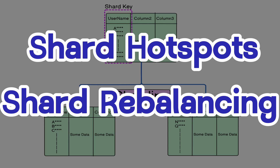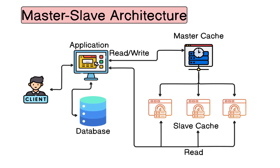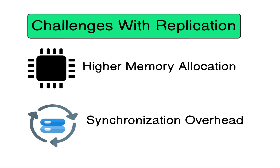Another approach is replication using master-slave architecture. Cache data is duplicated across multiple servers for fault tolerance. Unlike sharding, every cache server holds the complete cache data. One master server handles all writes and updates, while multiple slave servers hold copies of data and can serve read requests. If the current master server fails, a slave server is promoted as master. In this approach, since data is stored multiple times, it requires higher memory allocation, and there is synchronization overhead for keeping all replicas updated and in sync.